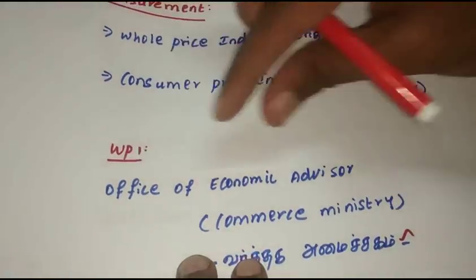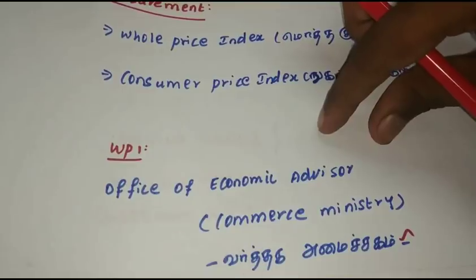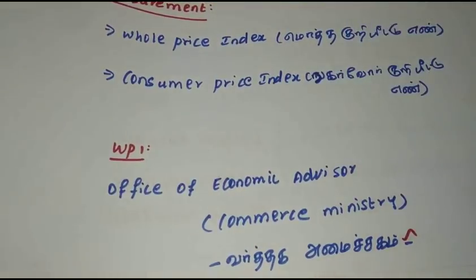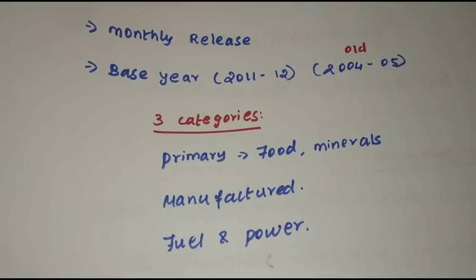You can get information from the Office of Economic Advisor. Next, let's list the monthly list. If you can get a basic reference, you can click on the national page.